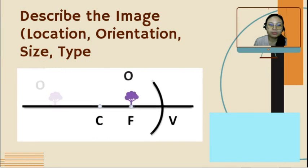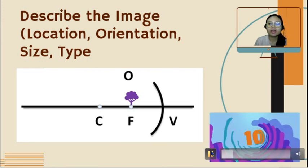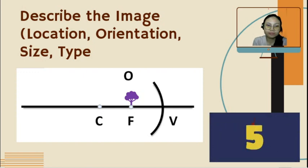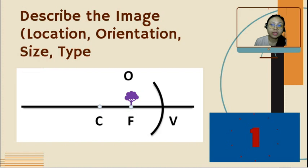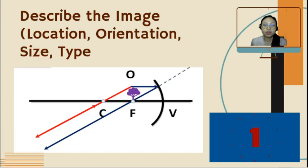Second picture: what if the object is at F? You have 10 seconds to write down your answer. Time's up. There will be no image formed if the object is at F, because the rays will form parallel lines.